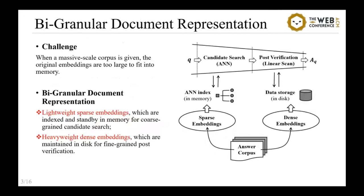However, the solution is challenging when a massive-scale corpus is given, as the ANN index can be too large to fit into memory. For example, 1 billion float embeddings will take a 3-TB RAM space.